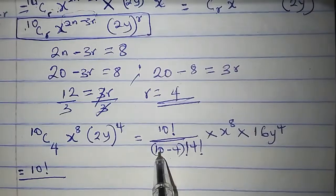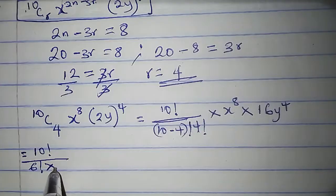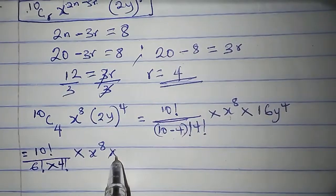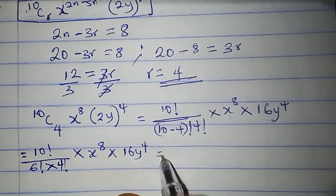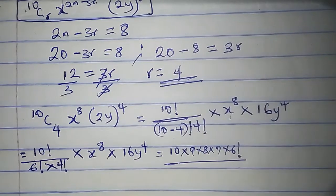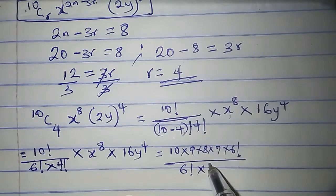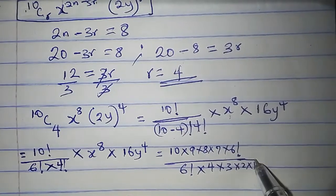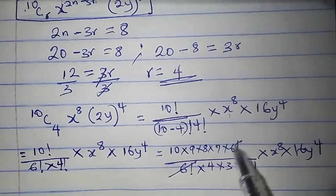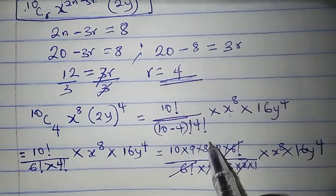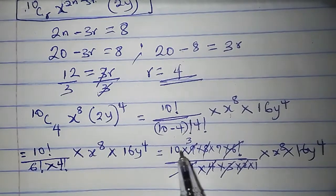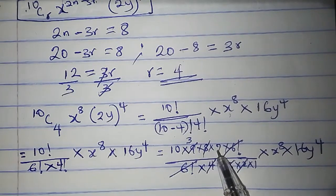10 factorial expanded is 10 times 9 times 8 times 7 times 6 factorial. I'm stopping at 6 factorial because we have a 6 factorial in the denominator — they cancel. 4 factorial is 4 times 3 times 2 times 1. Then times x raised to the power of 8 times 16 y raised to the power of 4. The 6 factorials cancel. 4 times 2 is 8, cancel the 8. Then 3 in the denominator leaves 1, and the 9 becomes 3. So we have 10 times 3 times 7 times 16.